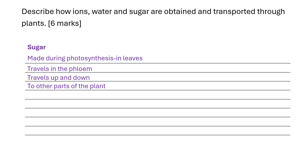So we've described how ions, water and sugar are obtained and transported through the plant for six marks.